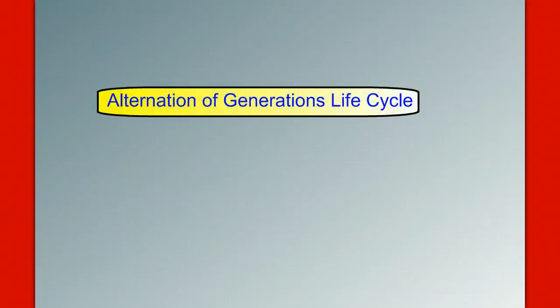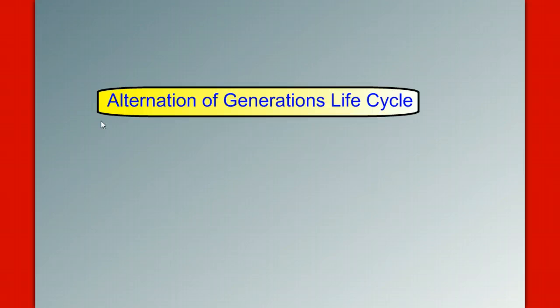In this video, we're going to look at the alternation of generations life cycle. This generic life cycle can be seen in simple produce like green algae, but it's also the basis of all of our fungal life cycles and all of our plant life cycles. So it's very important that we learn it now — it will make learning the fungus life cycles and the plant life cycles much easier.